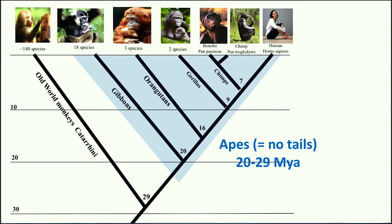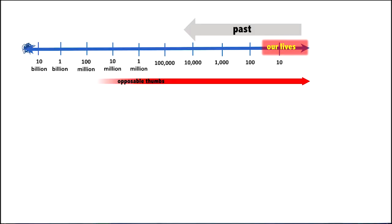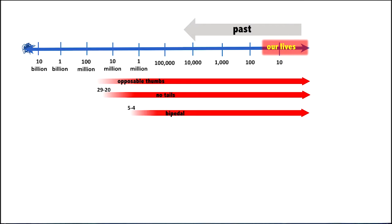And what about walking? We became bipedal much more recently, about five to four million years ago. So if we put that on our timeline, there are opposable thumbs, no tails between 29 and 20 million years ago, and then we became bipedal about five to four million years ago.